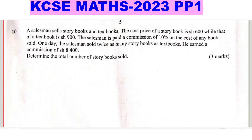Question 10. A salesman sells storybooks and textbooks. The cost price of a storybook is 600 shillings while that of a textbook is 900 shillings. The salesman is paid a commission of 10% on the cost of any book sold. One day, the salesman sold twice as many storybooks as textbooks and earned a commission of 8,400 shillings.